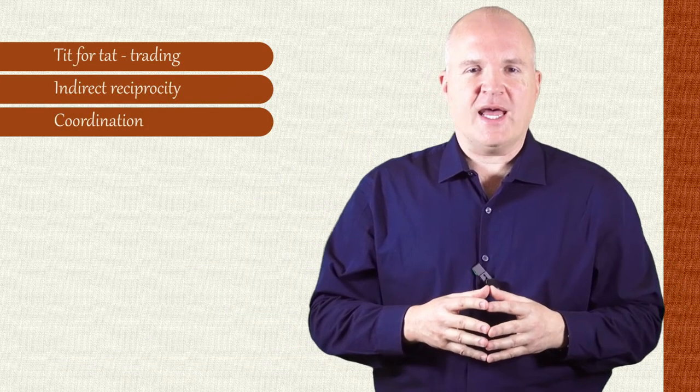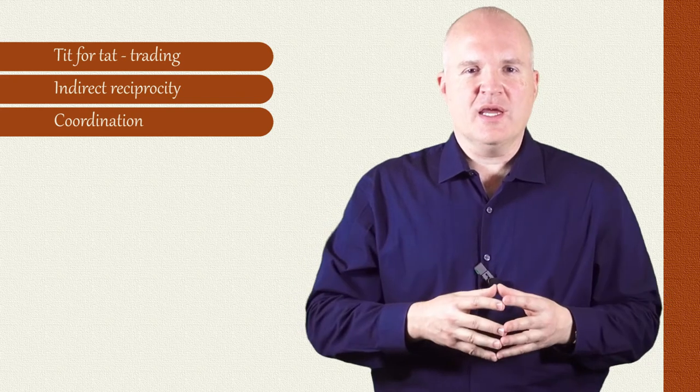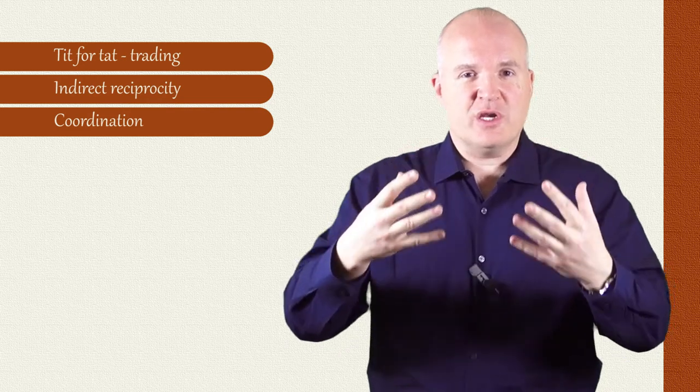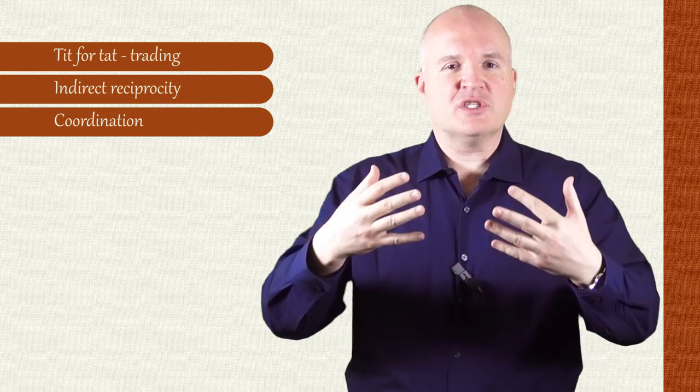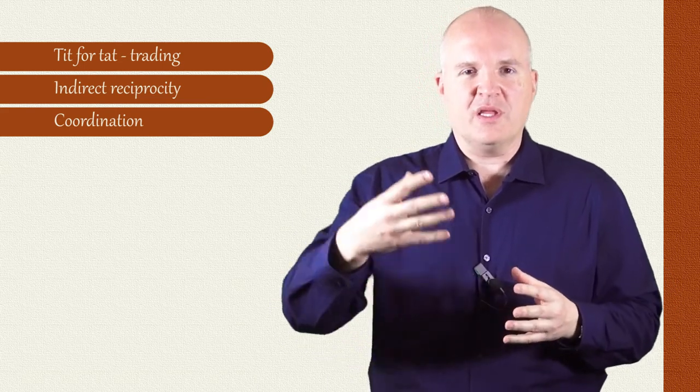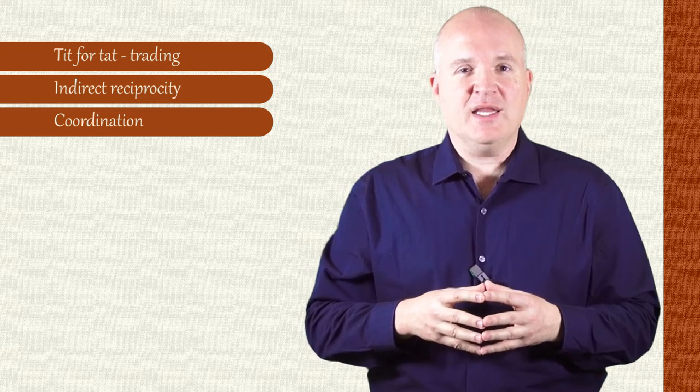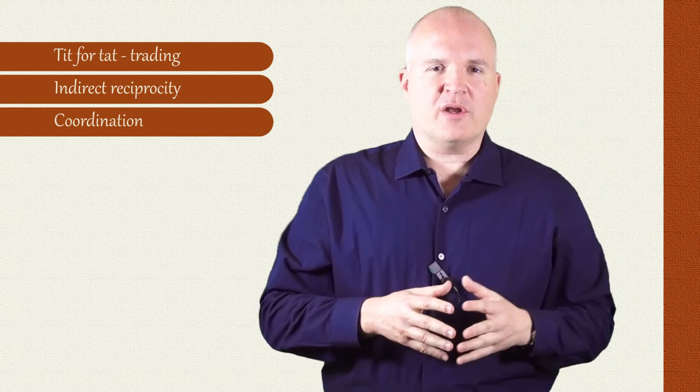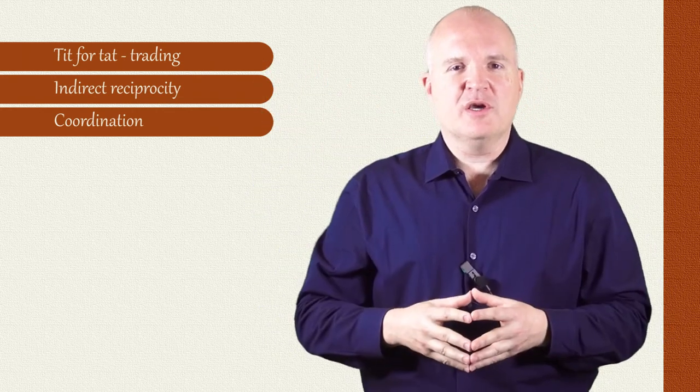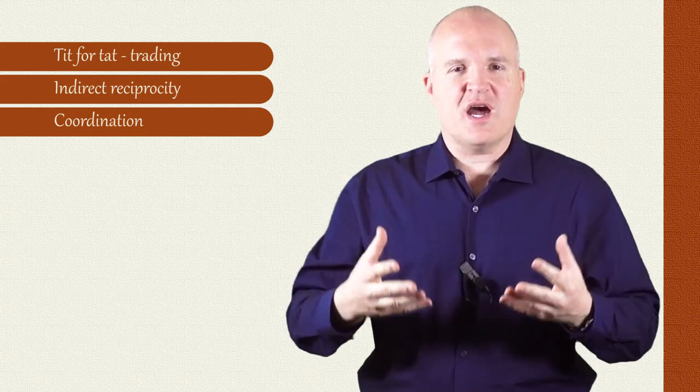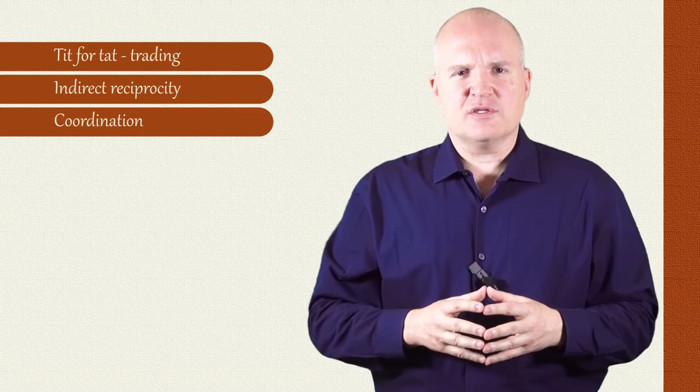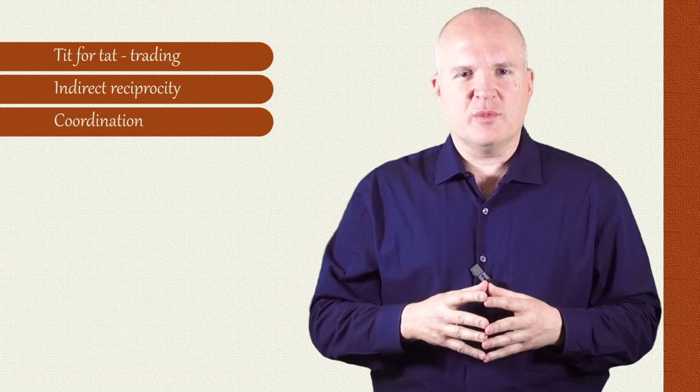So the first answer, tit for tat, sometimes we're just trading. And as long as we've got memory of who we've traded with, it's in my interest to trade with you, and so it's in my interest to help you in general. So giving you accurate information is a way of trading with you, hoping that you in turn will give me accurate information when I need it. I might give a third party accurate information so that you'll observe me, so I'll develop a reputation for someone who gives accurate information, who's sincere, honest, competent, and so on. And then other times, we're just coordinating. So those are three answers that explain why we might be truthful in communication.